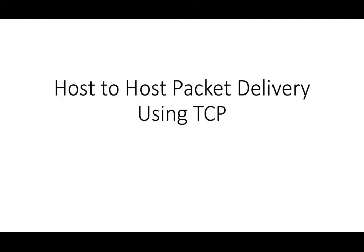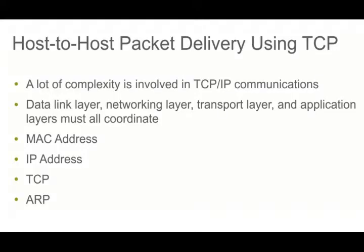There is quite a bit of complexity involved in TCP communication. You have a number of layers: the data link layer, the network layer, the transport layer, and the application layer — all involved and coordinating with one another. You have MAC address at the data link layer, IP address at the network layer, TCP at the transport layer, and ARP between the data link and network layer. There are other protocols and functions all happening in concert.